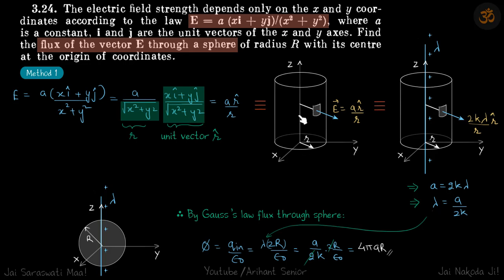What is the charge density on that wire? Just compare the constants. A is equal to 2k lambda, which means lambda is equal to a by 2k. This wire here, which is not shown but it is there, that's why we are getting this field. The lambda on that wire is a by 2k.